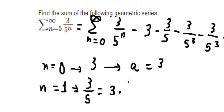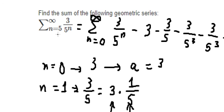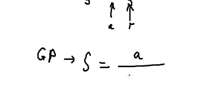...should be r. Now the formula of the geometric progression: the sum to infinity equals a over (1 minus r).